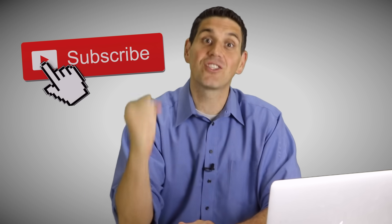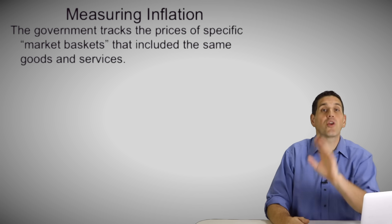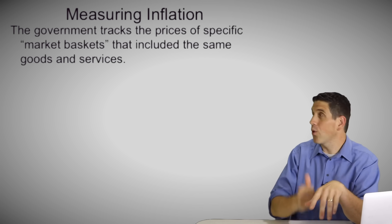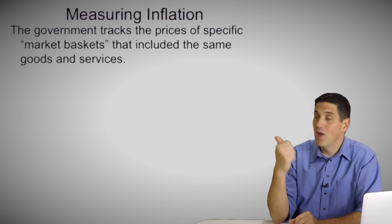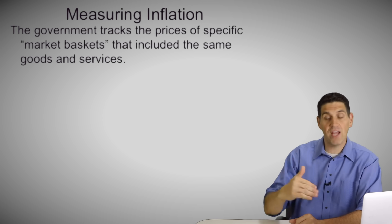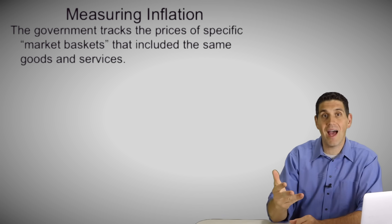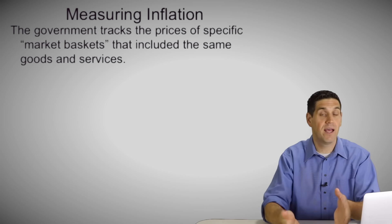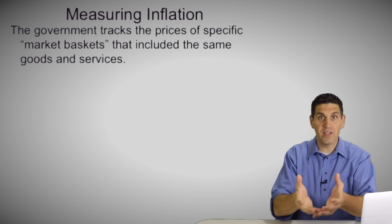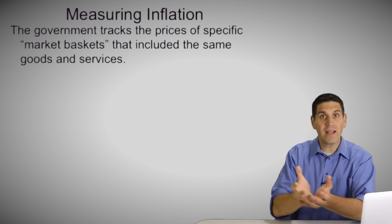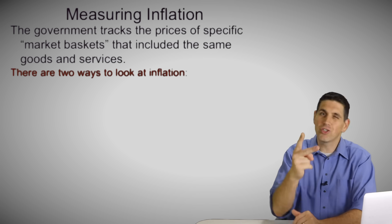Let's jump into this stuff — let's talk about inflation. Your teacher or professor already went over this, so I'm going to go really fast. When we're looking at inflation, we're talking about changes in prices over time, and the government tracks market baskets — they look at a specific number of goods and track that change in prices over time.